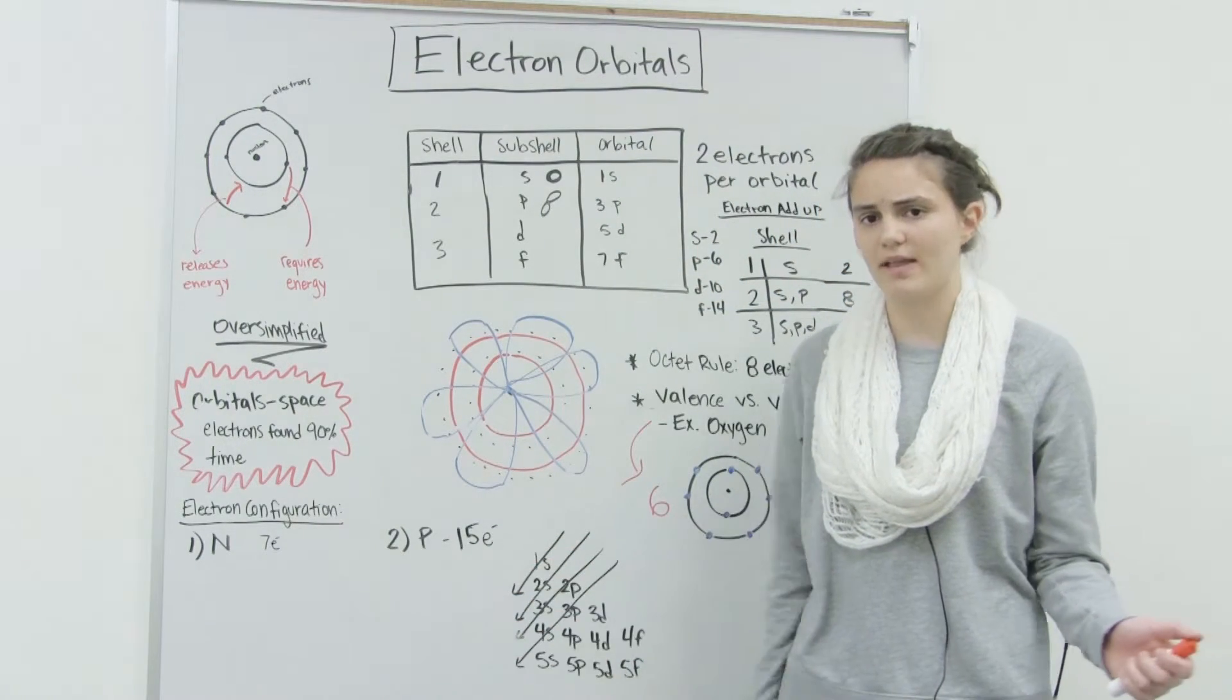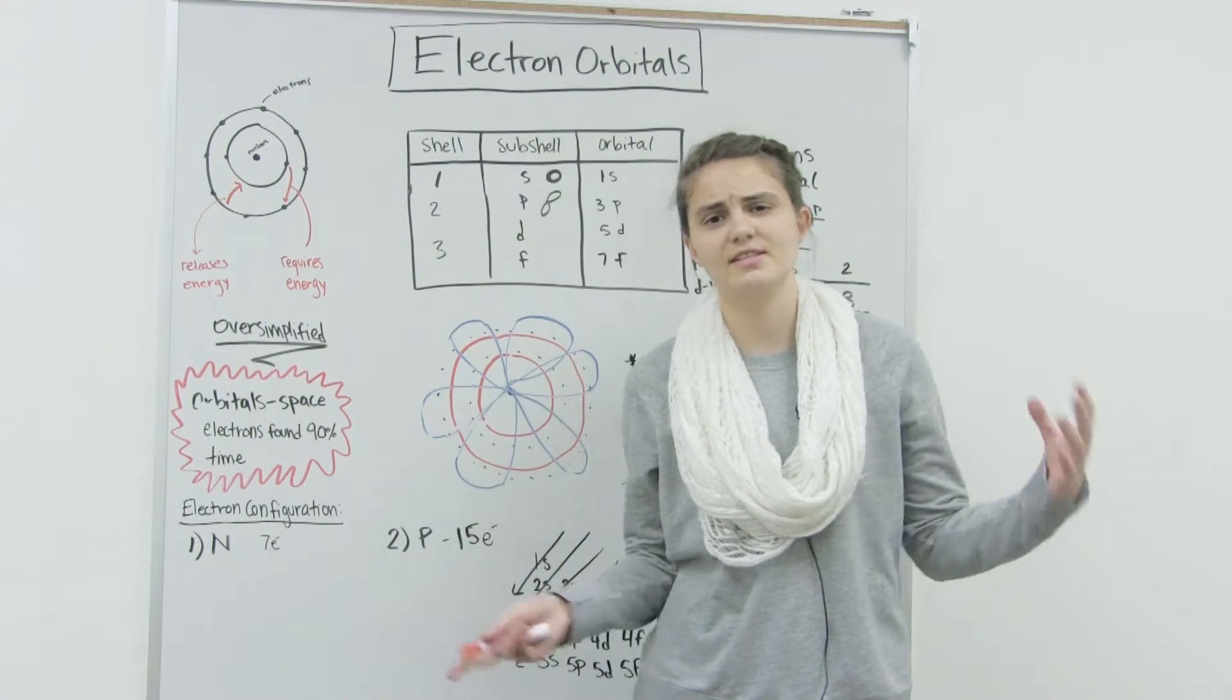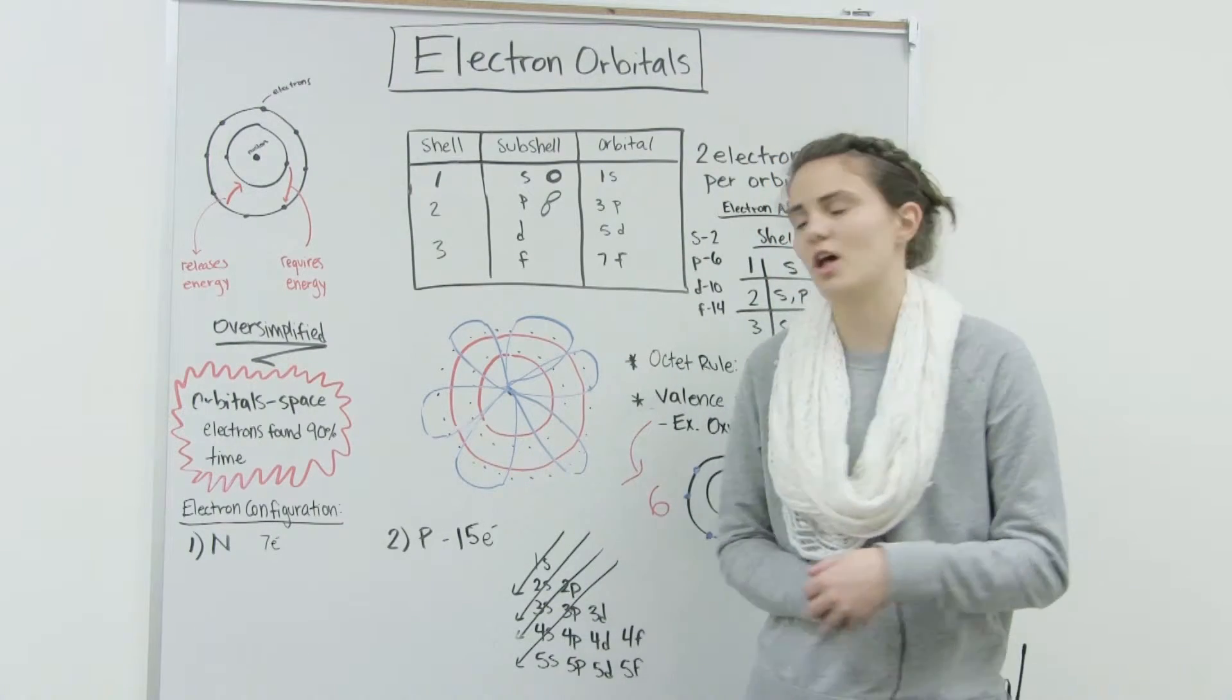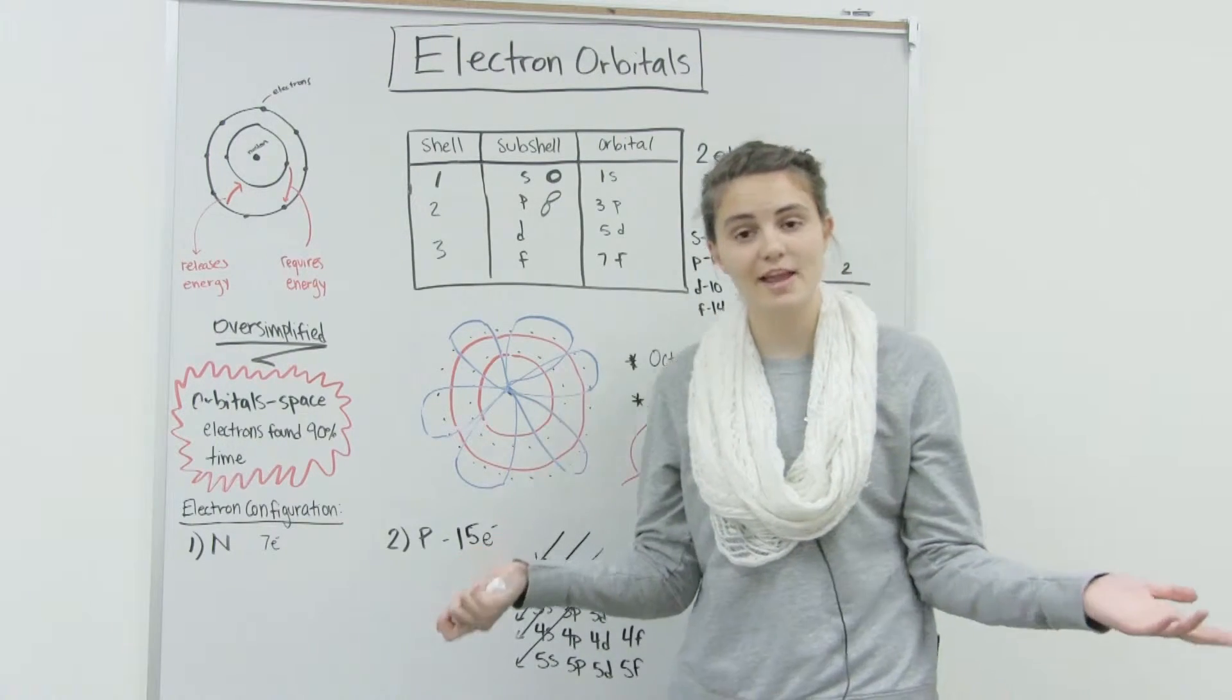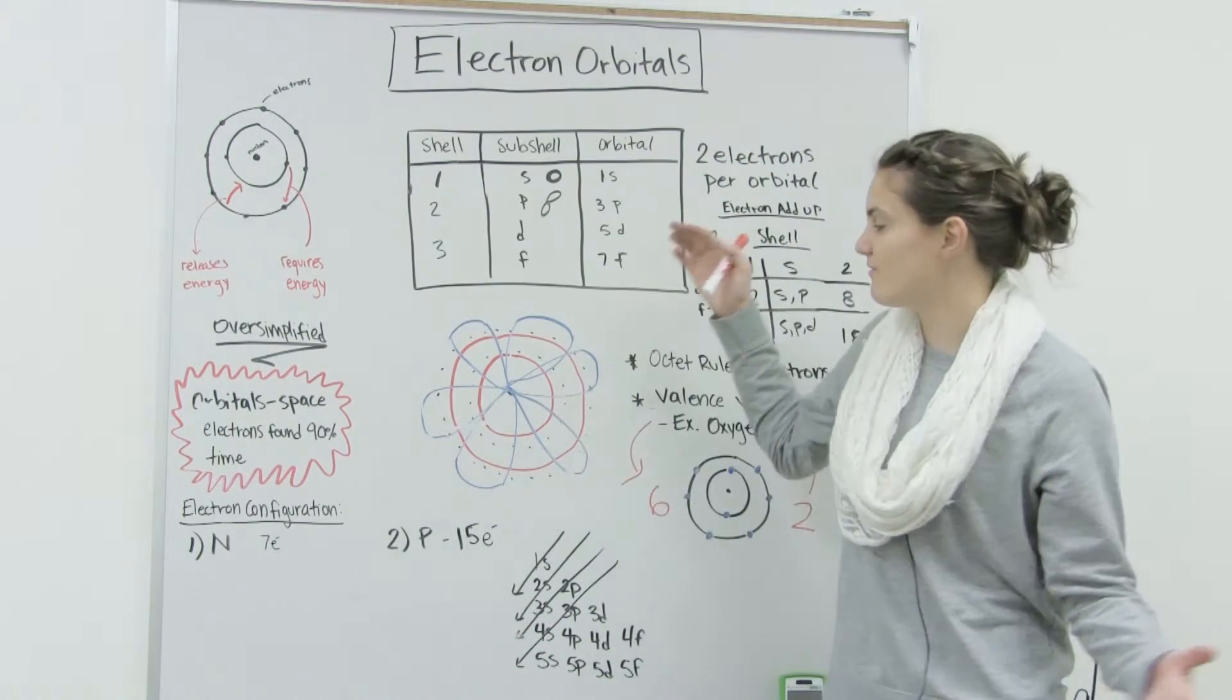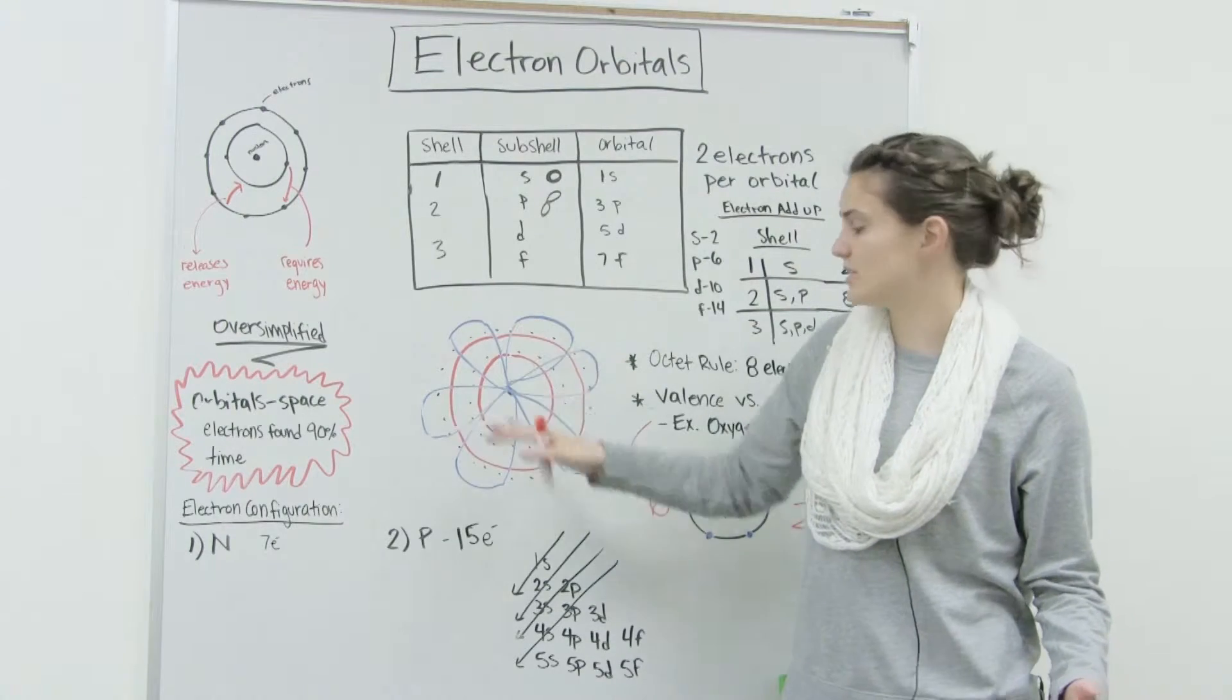Now we're going to talk about electron configuration. Electron configuration is just a way that scientists classify and show how the electrons are filling in a shell. And so electrons are lazy. They like to be at the lowest possible energy state. And so they're going to fill the lowest energy first. And so those are the ones that are closest to the nucleus.